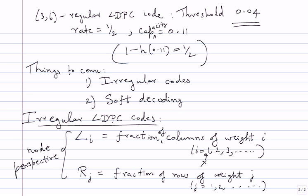The next thing is rate. How did it work out for the regular case? The rate became a function of just WR and WC: 1 minus WC divided by WR — a very simple function. In this case also, you can write down the rate as a function of capital L_i and capital R_j. Let me give you a few minutes to try and do that.